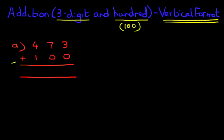So our first question is 473 plus 100. Notice the plus sign. Let's label the columns. We've got units, tens and hundreds.